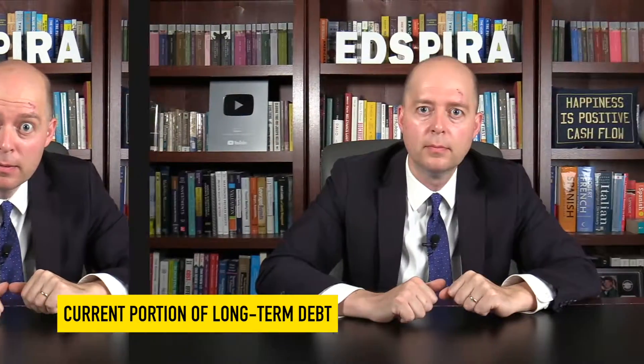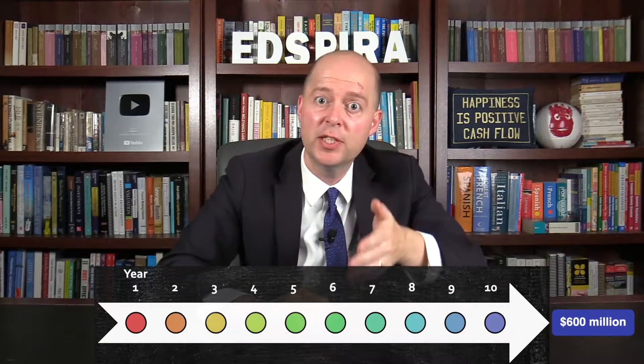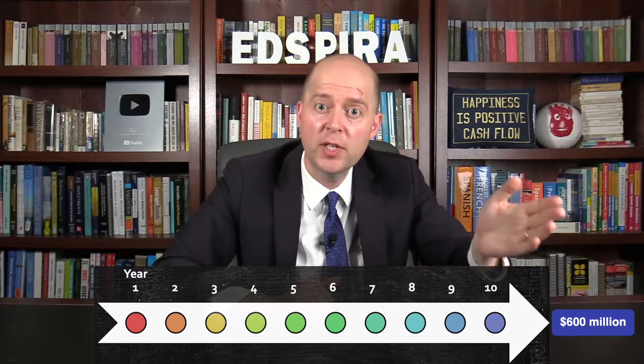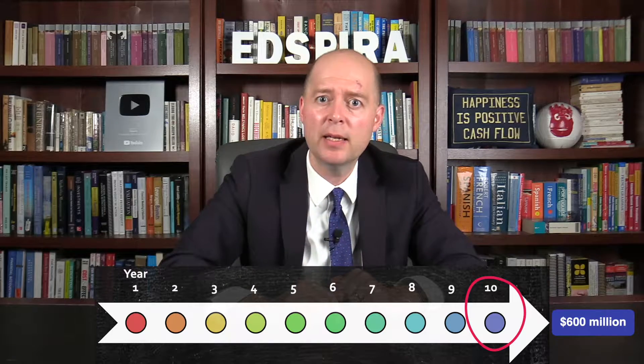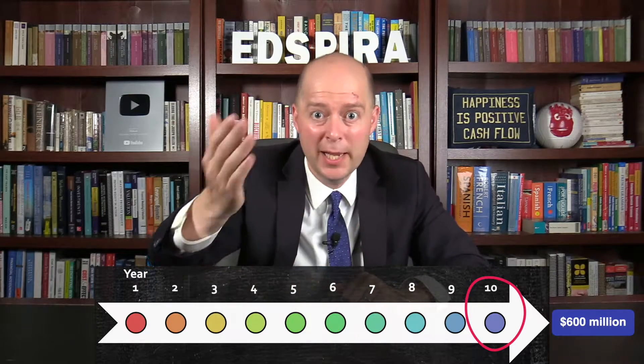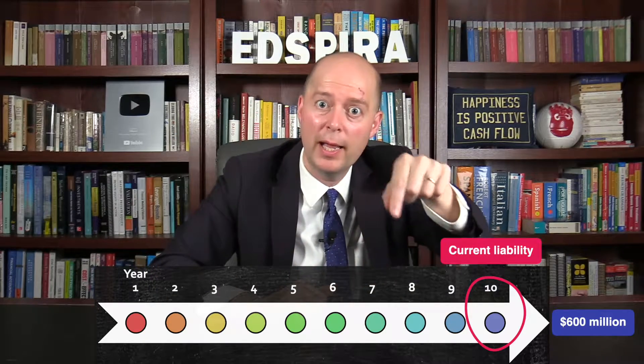You can't die before we discuss the current portion of long-term debt. Long-term obligations such as bonds and leases are typically classified as long-term liabilities. But what if they become payable in the next year? For example, let's say a company raised money by issuing a 10-year bond, and it's promised to pay its bondholders $600 million in 10 years when the bond matures. For the first nine years, the bond would be classified as long-term debt. But in year 10, the bond matures and the company has to pay the debt — thus it would be classified as a current liability. This is called the current portion of long-term debt.